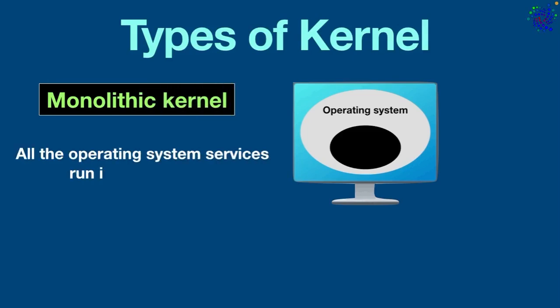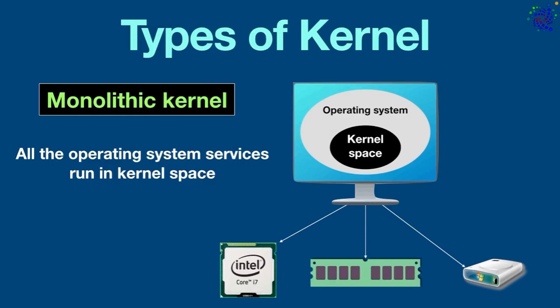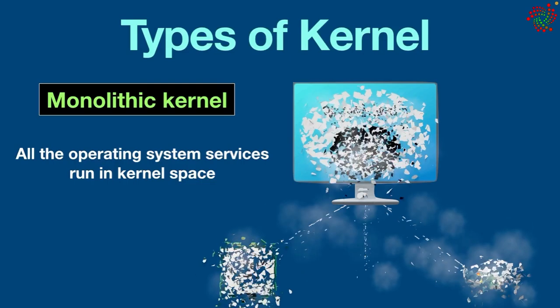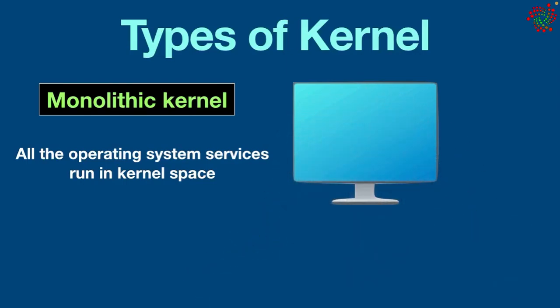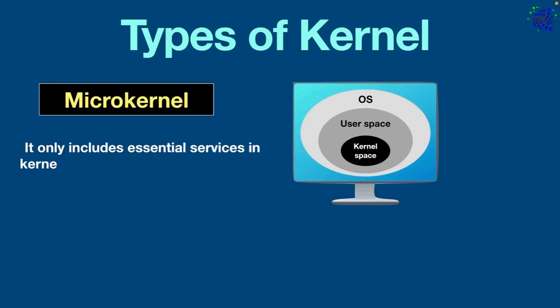Now let's talk about the types of kernel. Monolithic kernel: in this type, all the operating system services run in kernel space, which provides efficient communication between components. However, a failure in one component can crash the entire system. Examples of monolithic kernels include Linux, FreeBSD, OpenBSD, NetBSD, and Solaris.